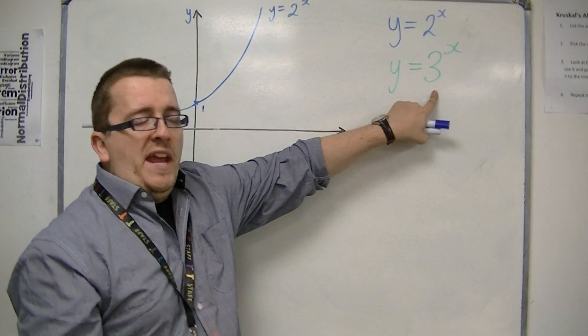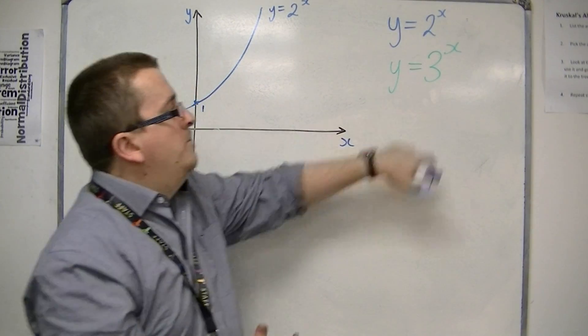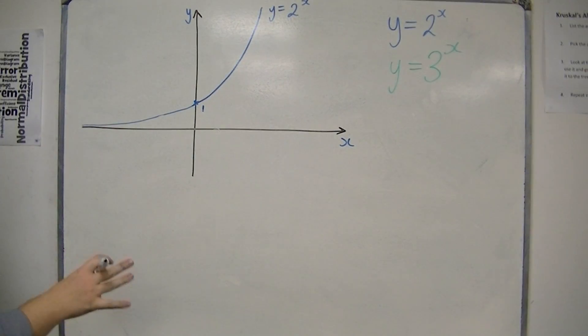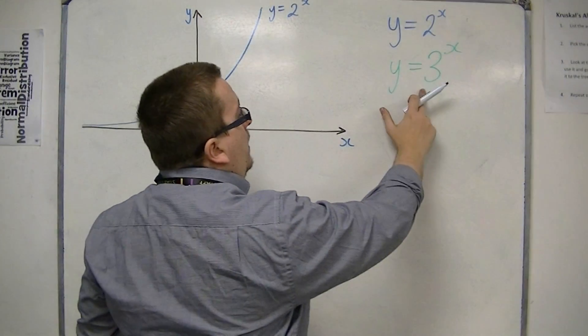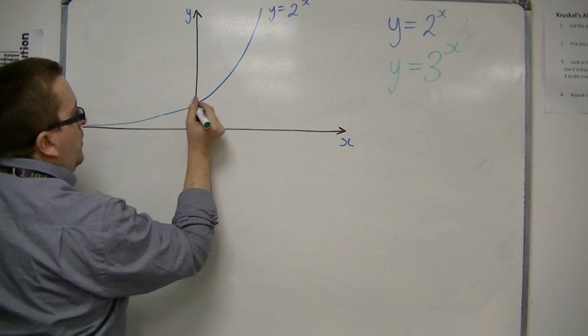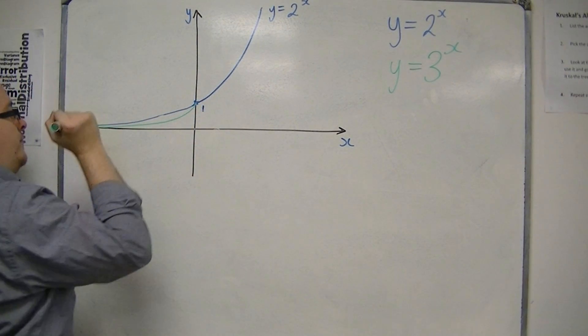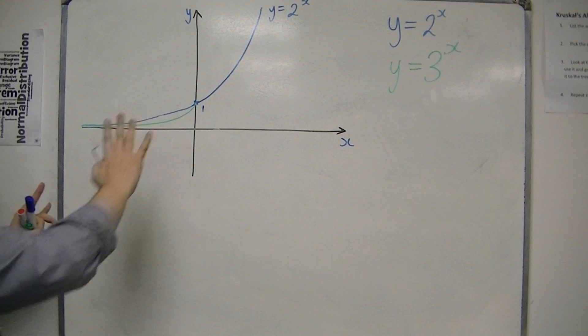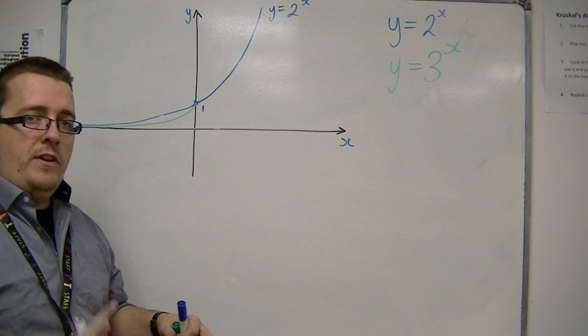When x is minus 10, minus 100, minus 1,000, this is getting very, very small. But it gets smaller quicker than 2 to the x. So I would expect that the curve would look something like this. It would get smaller quicker, but would still never reach 0.